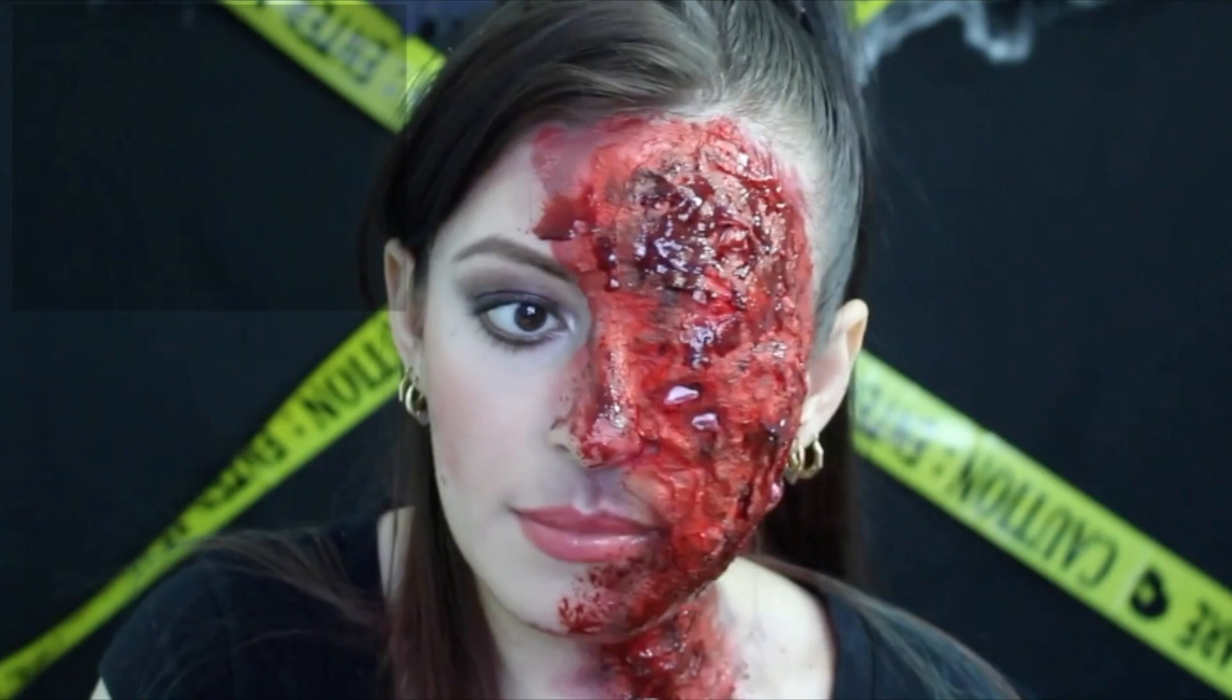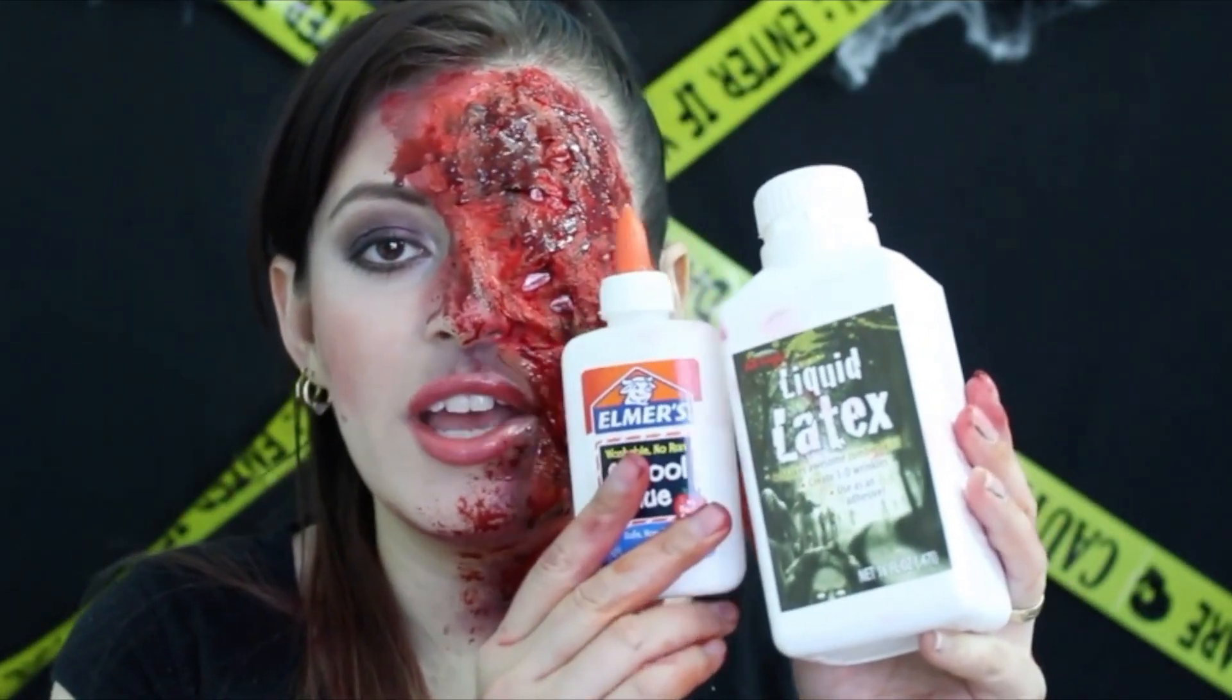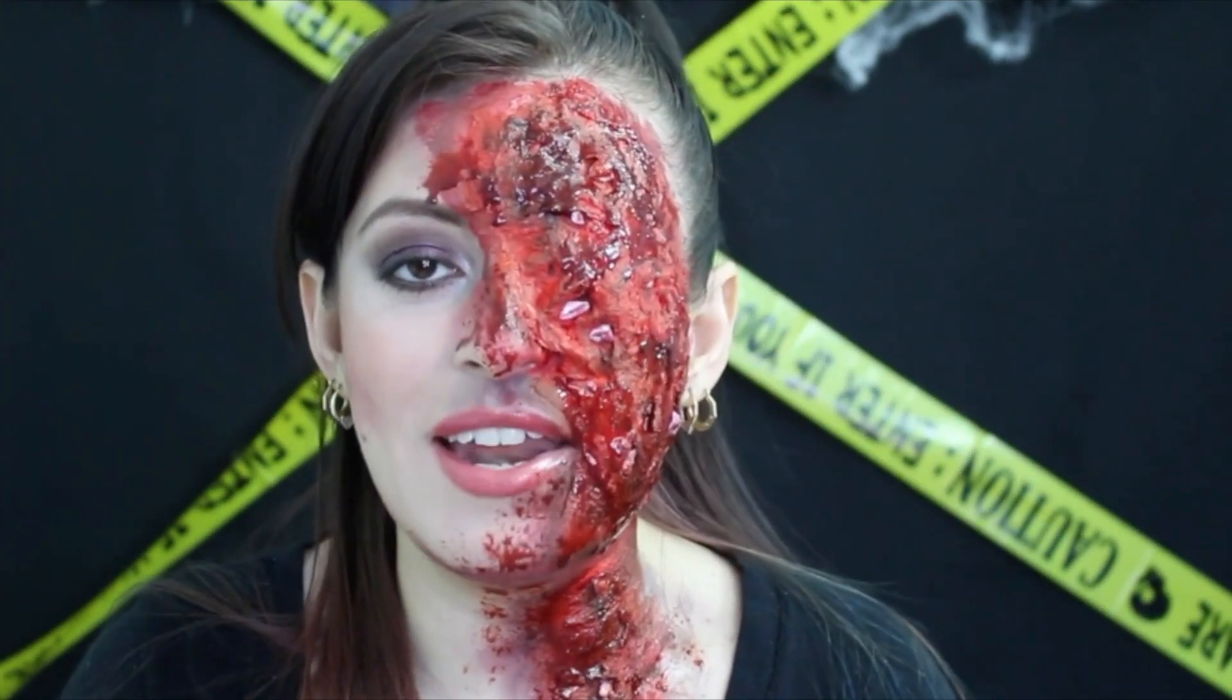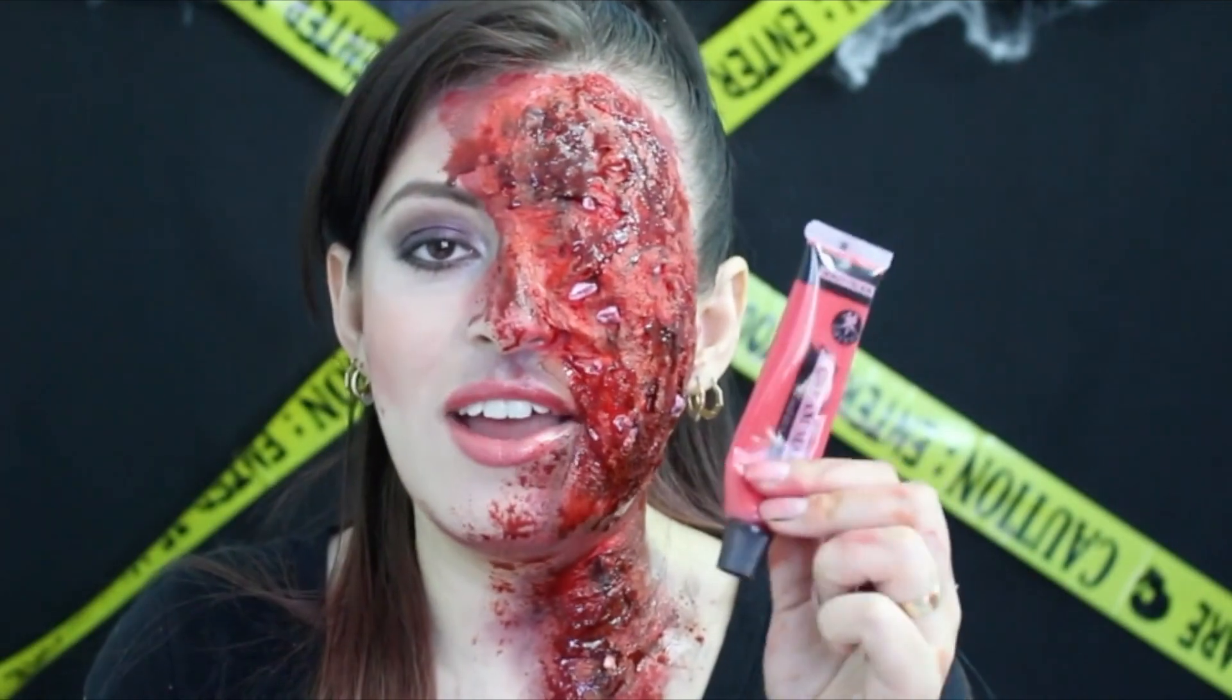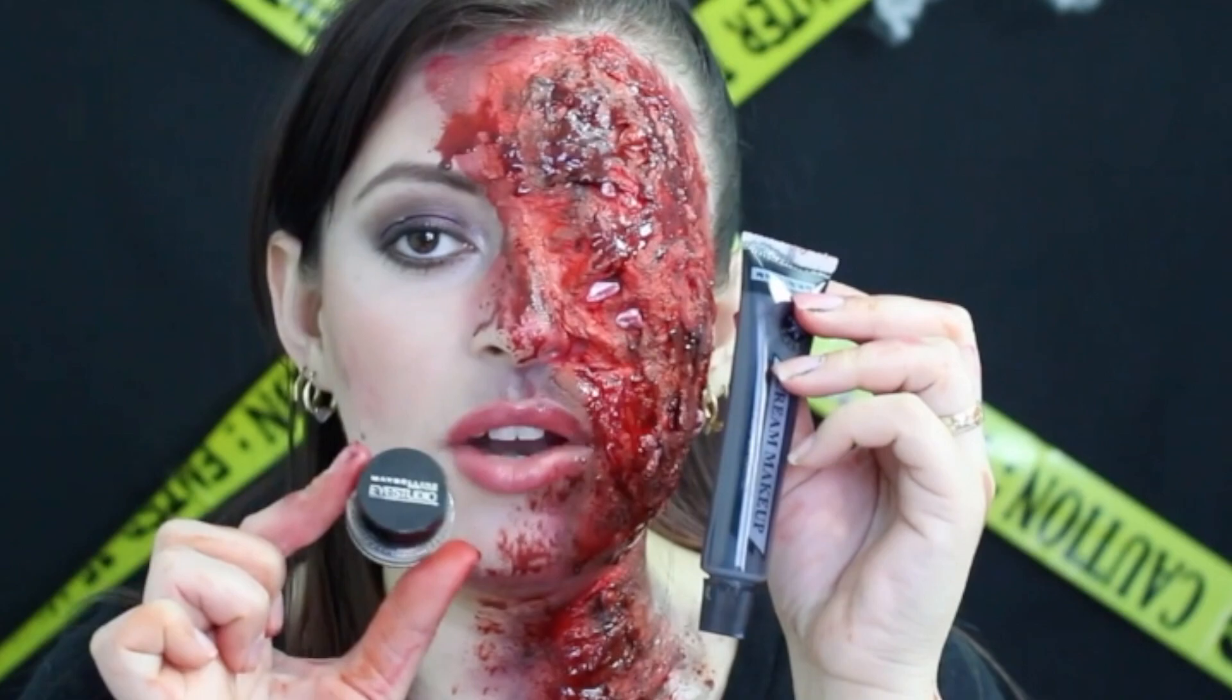For hack number nine I also wanted to share with you guys that it's possible that if you don't have liquid latex you can use Elmer's glue, and if you don't have red Halloween blood you can use red lipstick, and if you don't have white Halloween makeup you can use a black eyeliner.